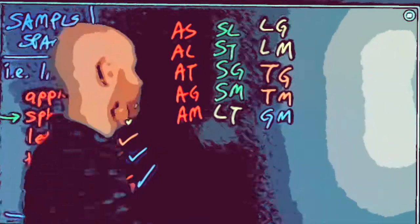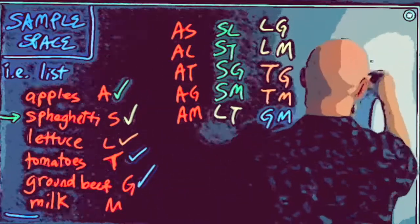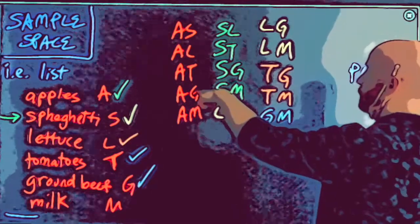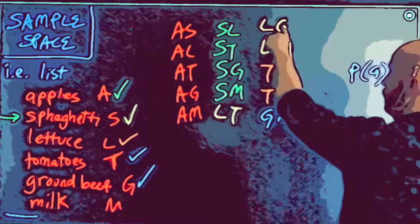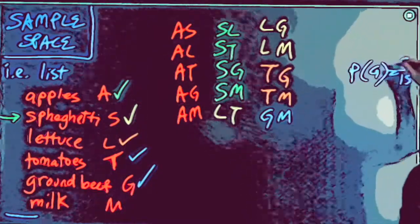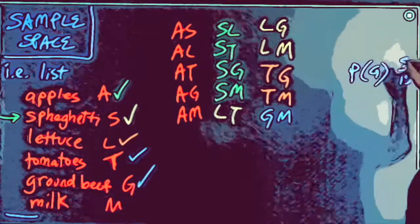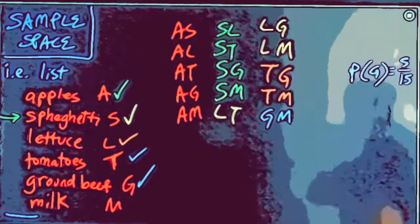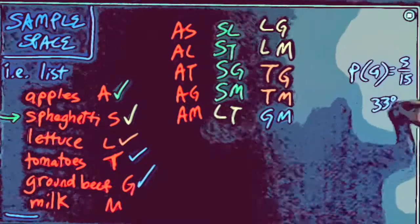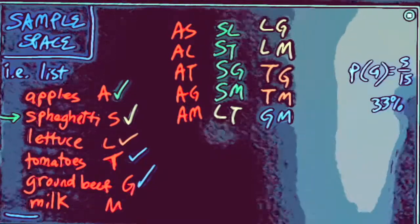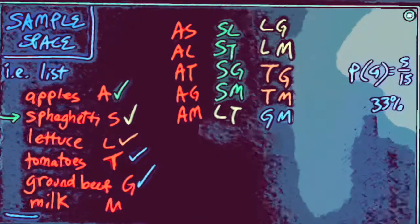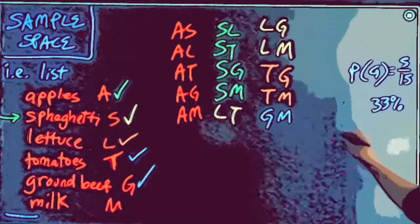What's the probability that I forgot the ground beef? I look through my list — one, two, three, four, five ways to forget ground beef out of 15 total ways. That's 5/15, or about 33%. That's the probability I forgot the ground beef.